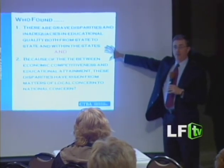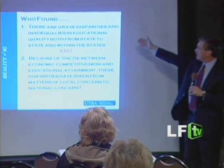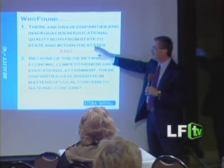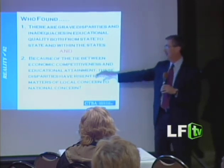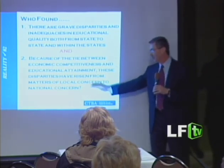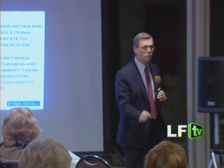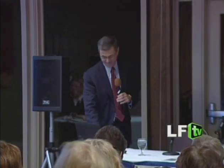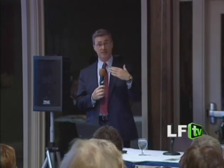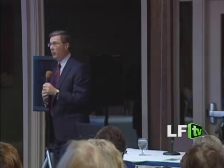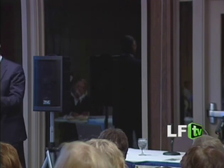This was specifically found — think about who made these findings. Finding number one: there are grave disparities and inadequacies in educational quality, both from state to state and within the states. Finding number two: because of the tie between economic competitiveness and educational attainment, these disparities have risen from matters of local concern to national concern. Who made that finding? The Nixon Commission in 1972. I'm actually serving on a current federal commission on educational excellence and equity, and it's amazing to me that we are looking at the exact same issues the Nixon Commission looked at 40 years ago.